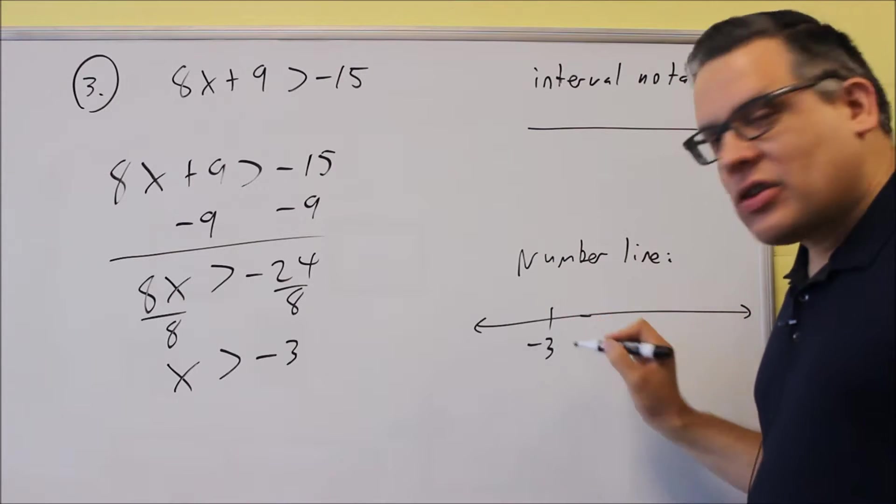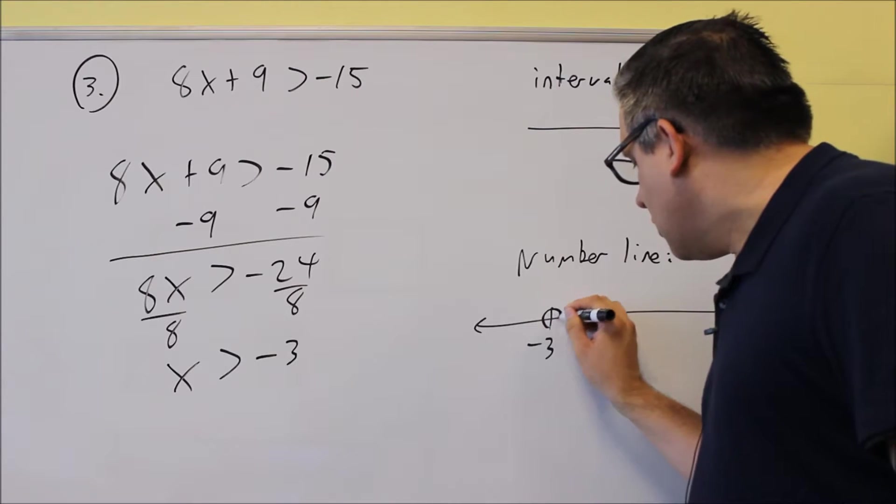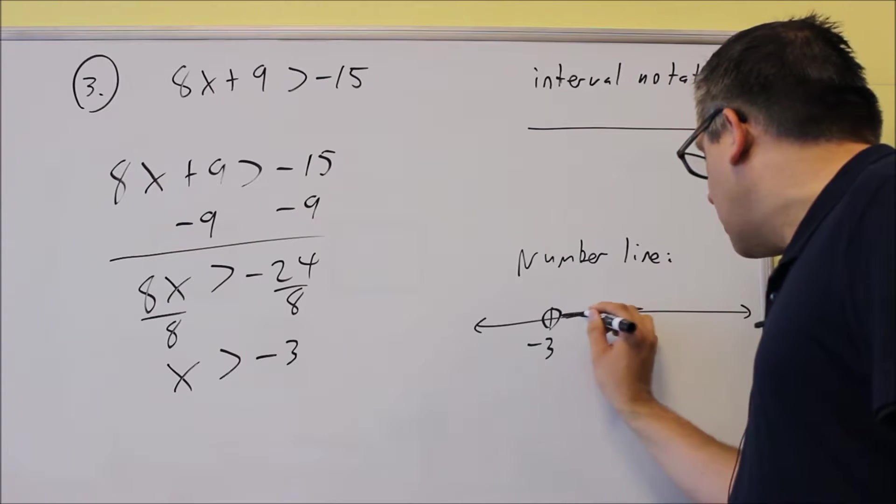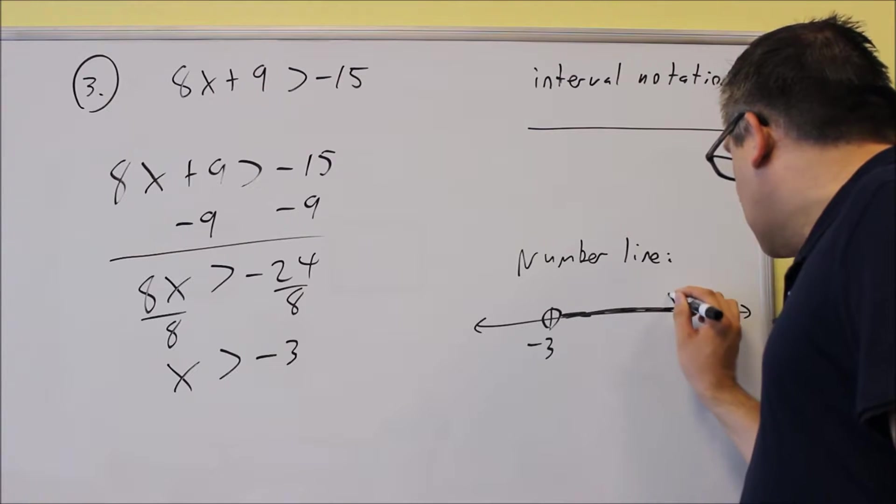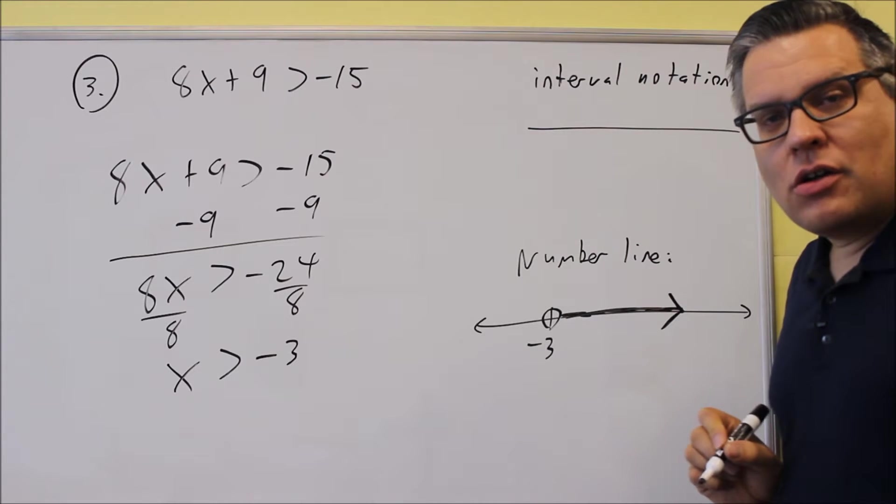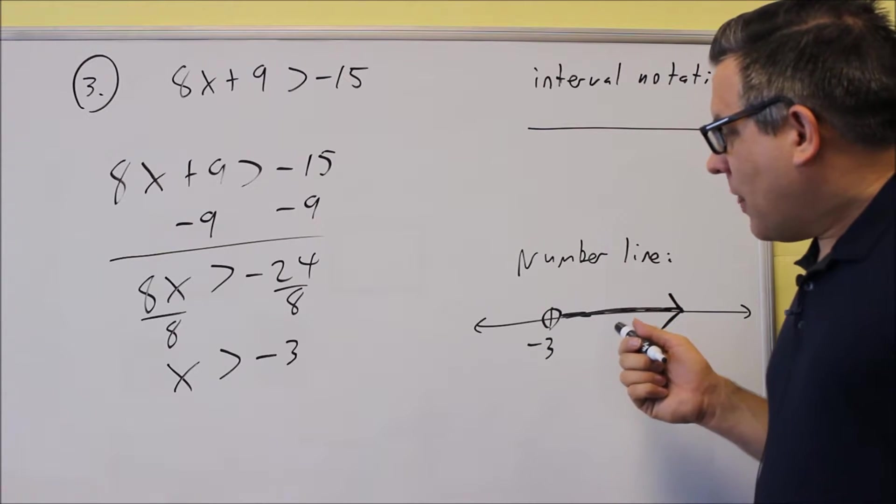Now, you can either use a parenthesis on this, or if you'd like to use the open circle notation, that's okay as well. So we'll use open circle notation, and that means we'll draw it going to the right, and this would be the correct number line drawing for this one.